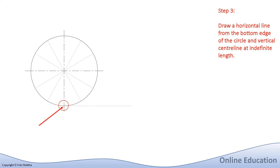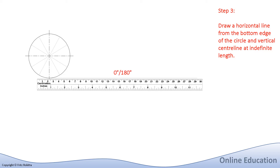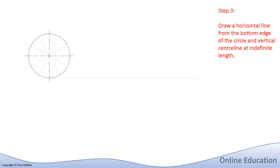Our next step is to make sure that we start right at the bottom edge of the circle, where the vertical center line cuts through the edge at the base of the circle, and then constructing a light construction line at 0 degrees out to the open space on paper. The length of this light construction line at the base of our circle will be indefinite in length.